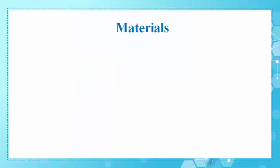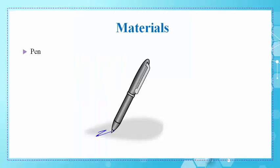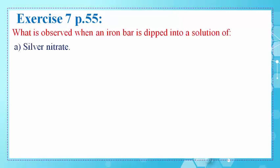The materials needed during this session are a pen and your chemistry notebook. We'll start by solving exercise 7, which is on page 55 of your chemistry book.